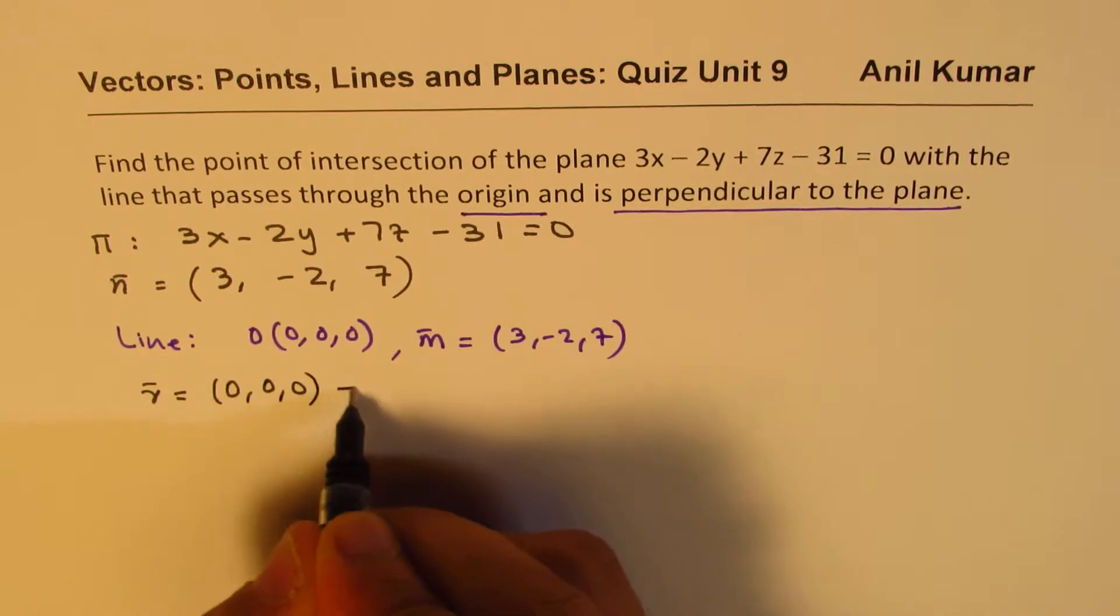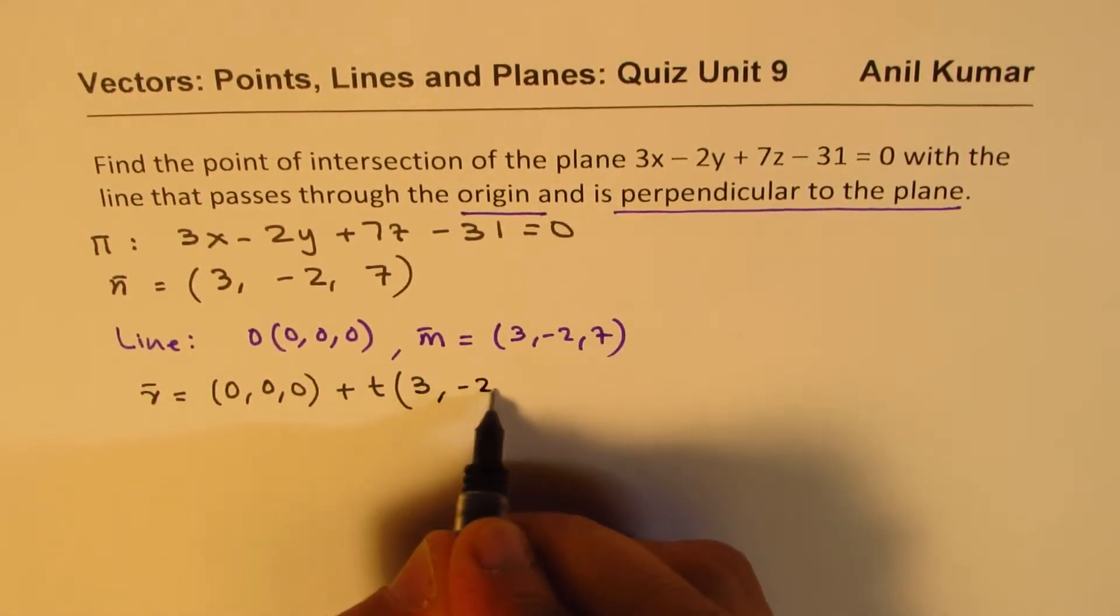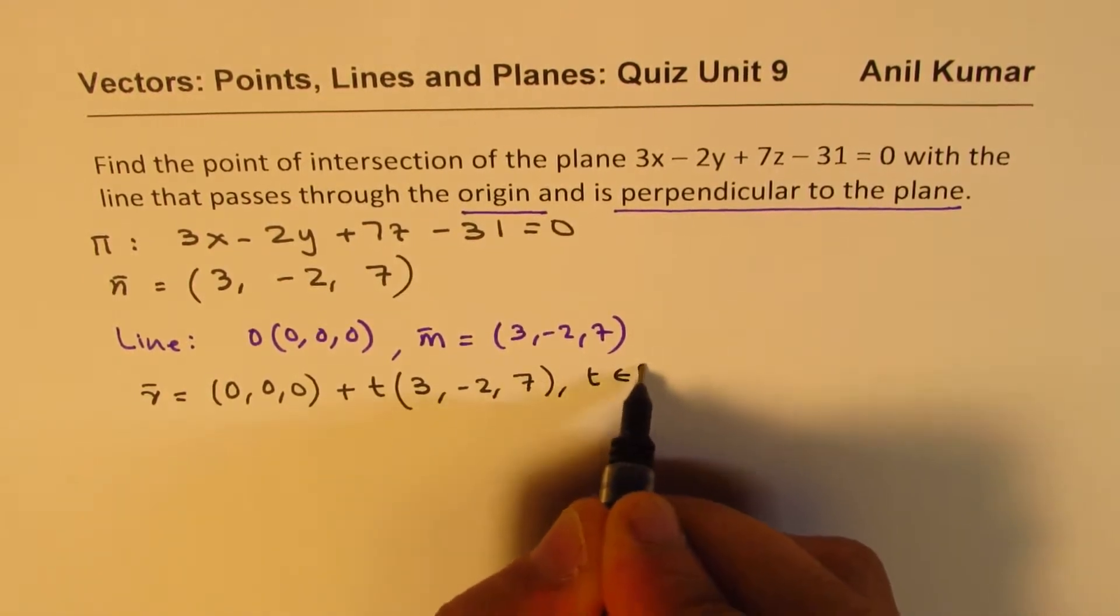(0, 0, 0) plus t times (3, -2, 7), where t belongs to real.